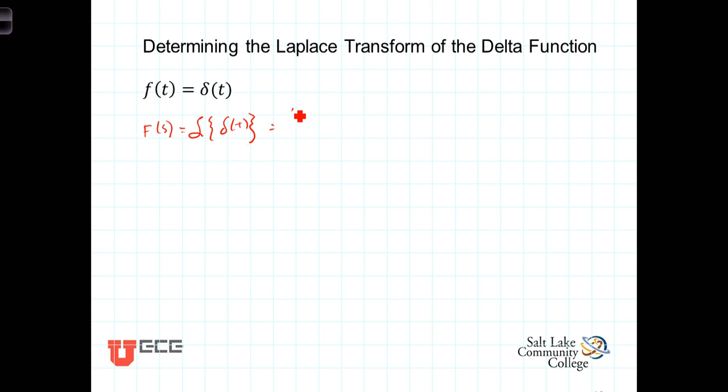This is equal to the integral from 0 minus to infinity of delta of t, e to the minus st, dt. Now you'll recall from our properties of the delta function that because the delta function exists only at, in this case, the value of t equals 0,